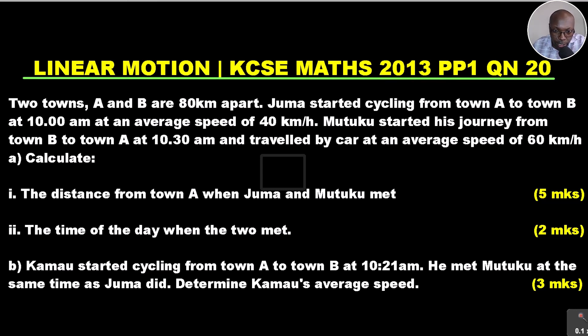Two towns A and B are 80 kilometers apart. Juma started cycling from town A to town B at 10 a.m. at an average speed of 40 kilometers per hour. Mutuko started his journey from town B to town A at 10:30 a.m. and traveled by car at an average speed of 60 kilometers per hour.